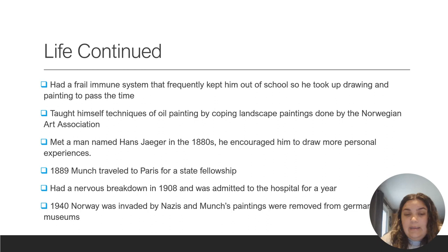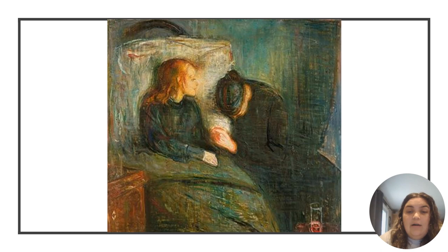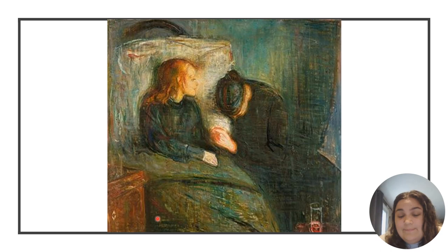This first painting we're going to look at is called The Sick Child. As you can see, we have this little girl who's sick. It looks like she's in bed, propped up against the pillow, covered up — she looks ill. Then we have a woman next to her, sitting, who looks like she's crying, kind of sad. It looks like it's representing something.